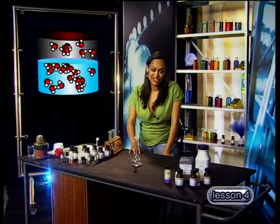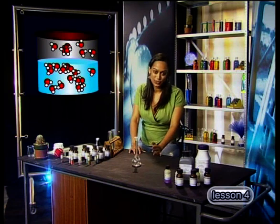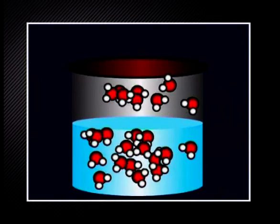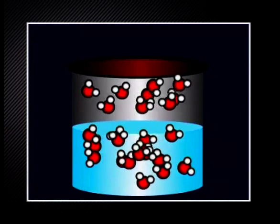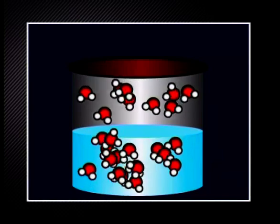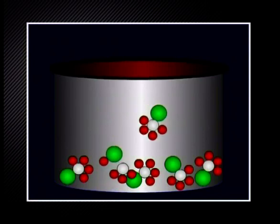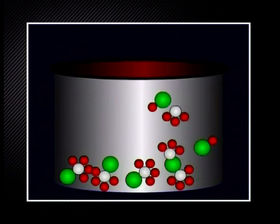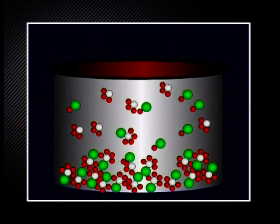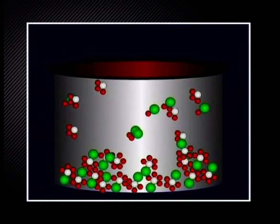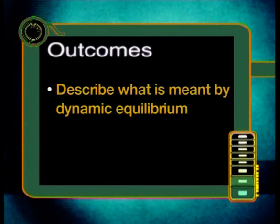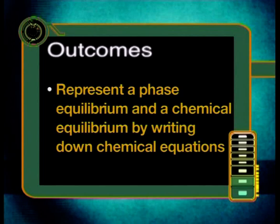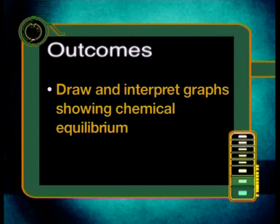That was a very interesting conversation about dynamic equilibrium. In today's lesson, we will explore two examples of dynamic equilibrium. The first example is called phase equilibrium, where substances change phase, just like the example of water in the closed container. The second is called chemical equilibrium. In a closed container, reactant molecules and product molecules collide with each other continually, but overall we observe no change in the number of product or reactant molecules. By the end of this lesson, you should be able to describe what is meant by dynamic equilibrium, represent a phase equilibrium and a chemical equilibrium by writing down chemical equations, and draw and interpret graphs showing chemical equilibrium.